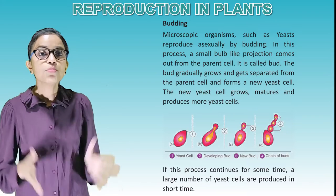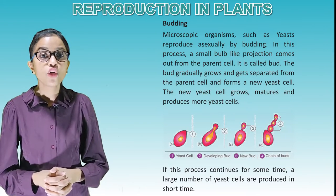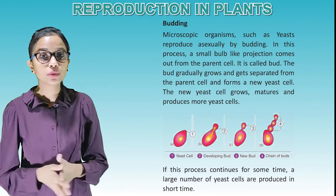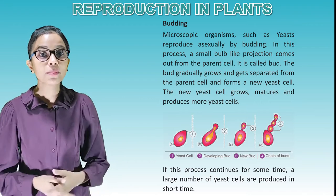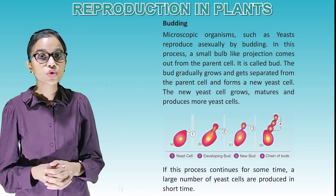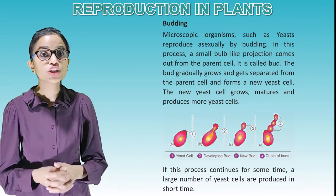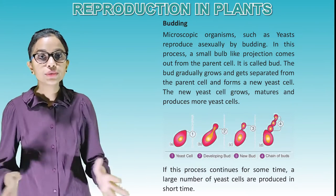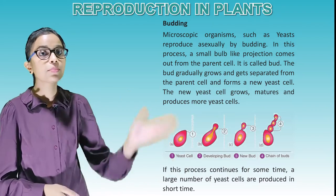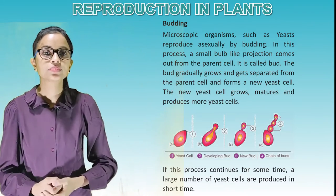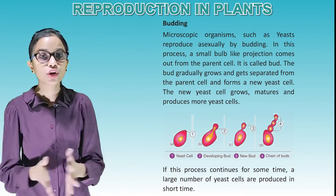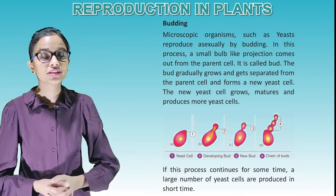Budding: microscopic organisms such as yeast reproduce asexually by budding. In this process, a small bulb-like projection comes out from the parent cell — it is called a bud. The bud gradually grows and gets separated from the parent cell and forms a new yeast cell. The new yeast cell grows, matures and produces more yeast cells. If this process continues for some time, a large number of yeast cells are produced in a short time.